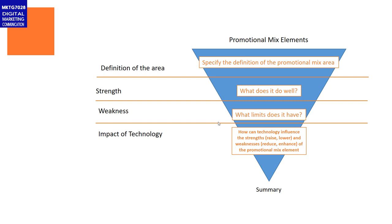Then we're going to go into the projective section: what is the impact of technology on this aspect of the promotional mix? What or how could existing technology or new technologies influence the strengths? That can mean it increases the strength or lowers it, and it can influence the weaknesses — it could reduce a weakness, create a bigger problem, or enhance the weakness of that element. The key here is that you've just told me what the strengths and weaknesses are, so the impact section should definitely pick up on those aspects you've just talked about.